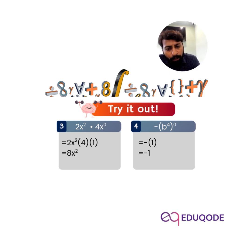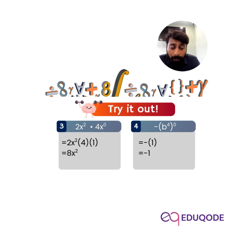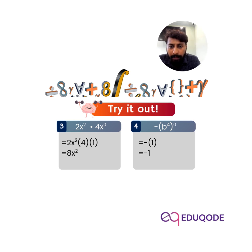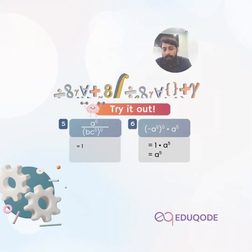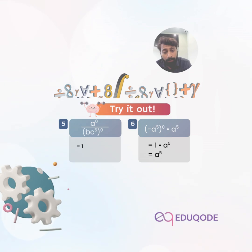Question four: minus bracket b power four, whole raised to power zero. The exponent four multiplied by zero gives zero, so b power zero equals one. Therefore, the answer is minus one.